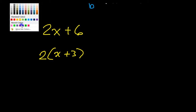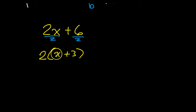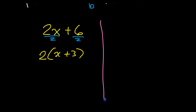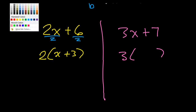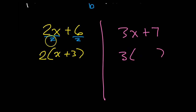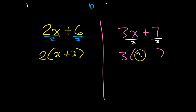But it's useful to understand this as dividing both terms by 2, especially when you have something that's not a multiple. For example, what if I had 3x plus 7 and I had to pull out that 3 even though it's not a GCF? I could still do it — I'd just divide everything by 3, leaving x plus 7 over 3.